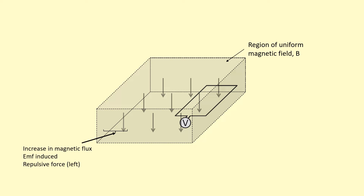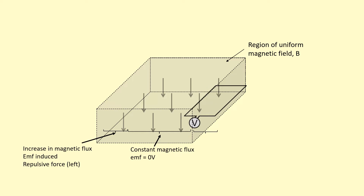As this coil moves inside the field, there's no actual change in flux — the magnetic flux going through the coil is constant and not changing — so during that stage there's no EMF induced and the voltage reading is zero. But when it starts to leave, there's a decrease in flux, so once again EMF is induced, but according to Lenz's law it's going to be in the opposite direction — a negative EMF. There's also going to be an attractive force towards the left, trying to pull it back into the field to oppose the decrease in flux.